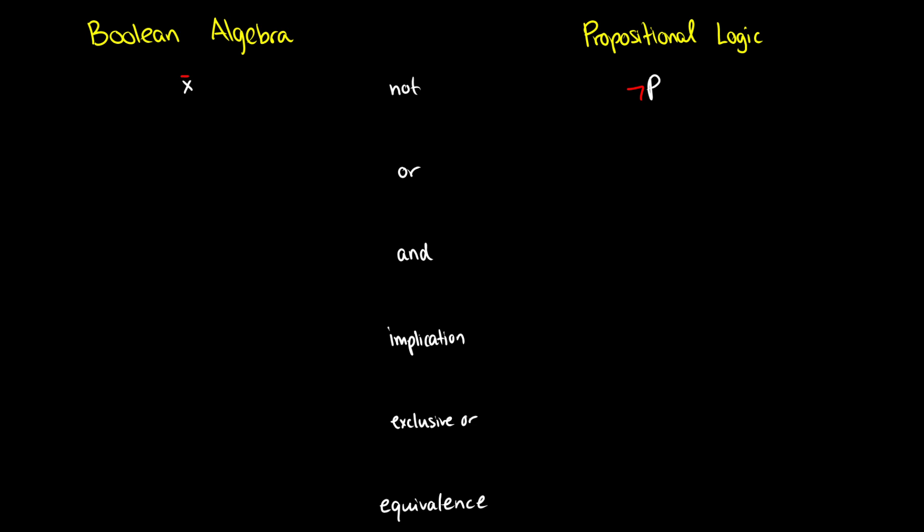For OR, we have this symbol P or Q, so we use the V, this thing called a wedge, and we put it between the two. In digital logic, in Boolean algebra, we have X and Y, and we use a plus symbol. So that is why in some systems of propositional logic, OR introduction is called addition because it uses the addition symbol in Boolean algebra.